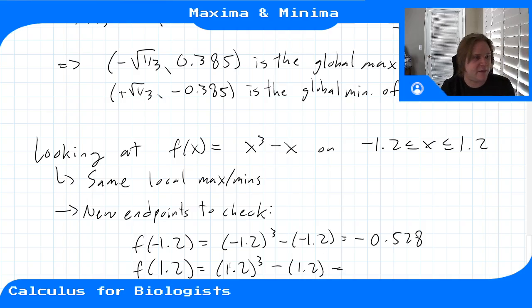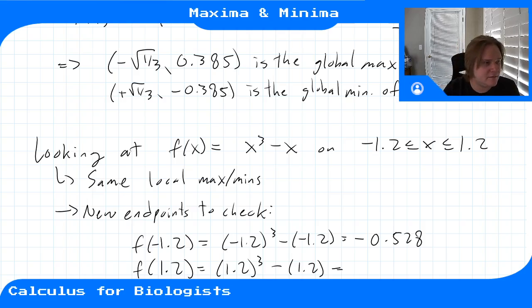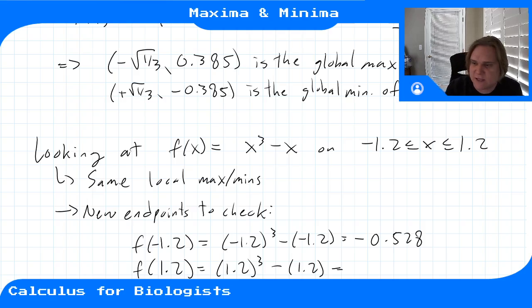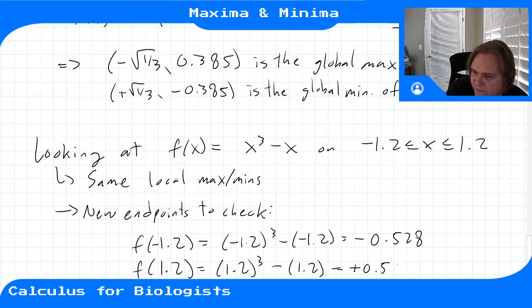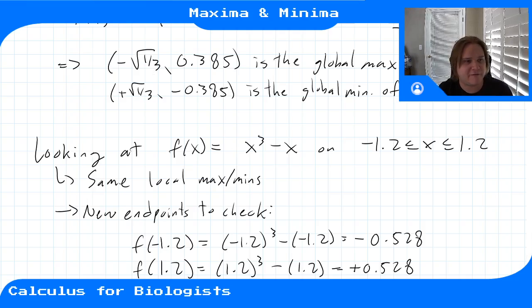At x = 1.2: f(1.2) = 1.2³ - 1.2 ≈ +0.528.